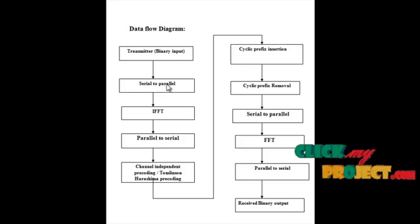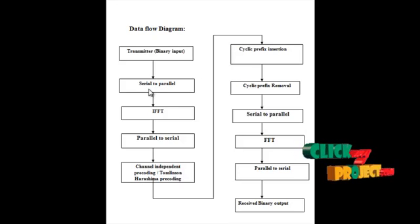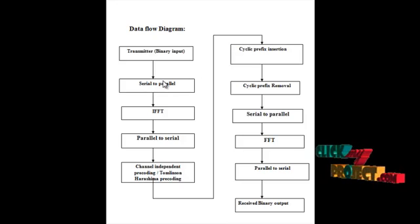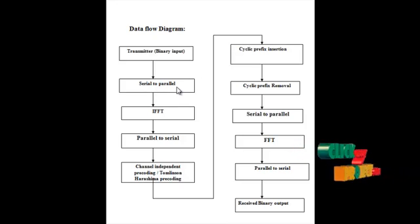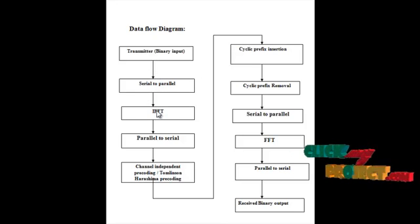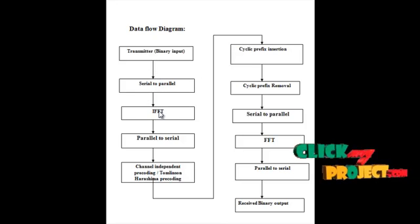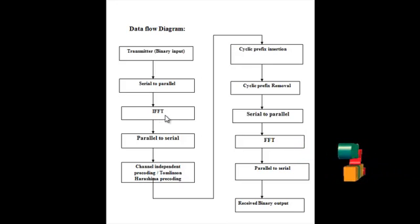The serial-to-parallel conversion converts the serial input signal into a parallel form. It depends upon the signal levels. The output is then given into the IFFT — Inverse Fast Fourier Transform.